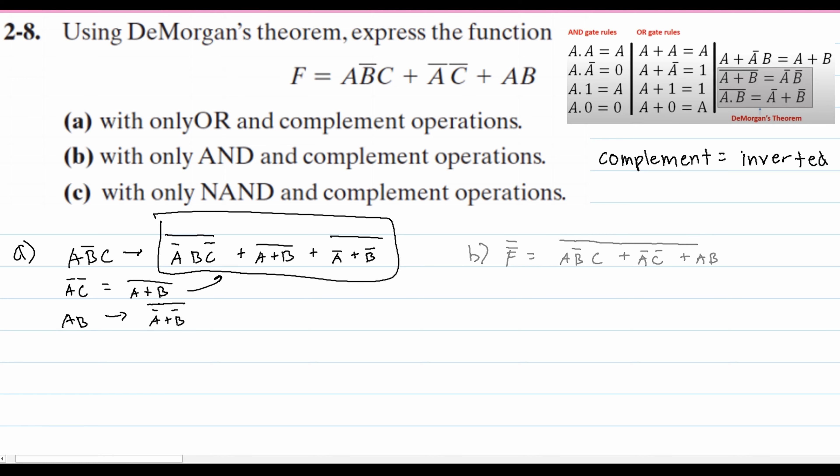So not like this, that would be wrong. We are going to have it like this. And note currently that the function is just how it was. We're just adding the two not bars over them. And so that is the answer for part b with only AND and complement operations.